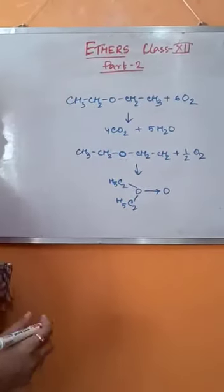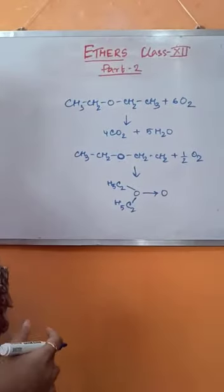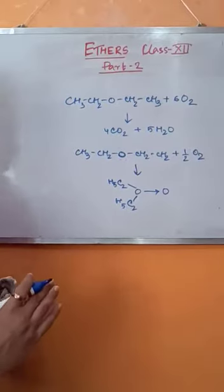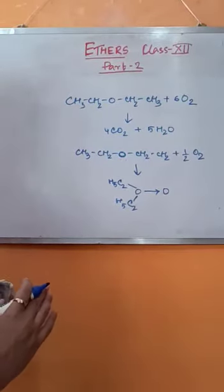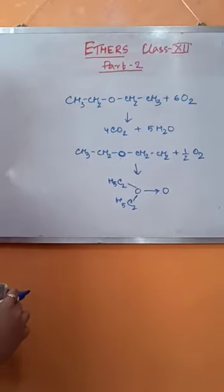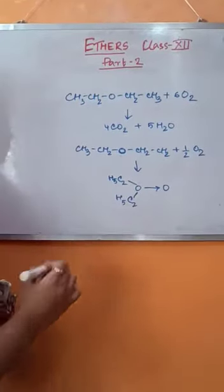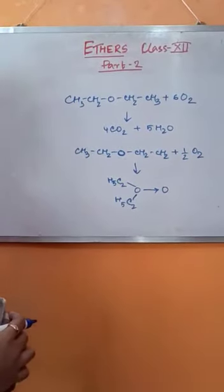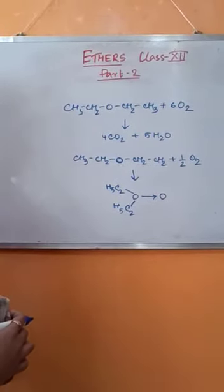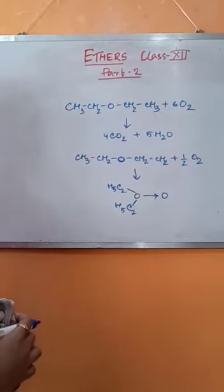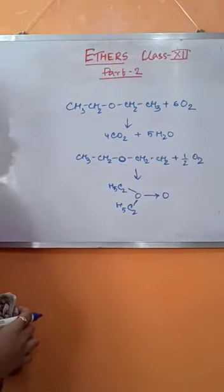Most of the time in ether solution, peroxides are found as impurities. This is the main reason for this. These impurities are explosives and they will obstruct the organic reactions when ethers are used as solvents. So impurities have to be removed.